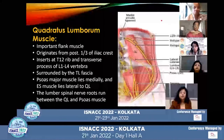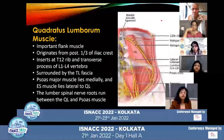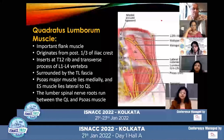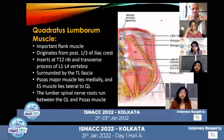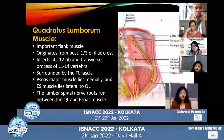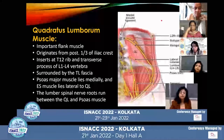The quadratus lumborum muscle is another important muscle of the back. It originates from the posterior one-third of the iliac crest and inserts at the twelfth rib and the transverse processes of L1 to L4 vertebrae. It is surrounded by the thoracolumbar fascia. The psoas muscle lies medially and the erector spinae muscle lies posterolaterally to the quadratus lumborum muscle. The lumbar spinal roots run between the quadratus lumborum and the psoas muscle.